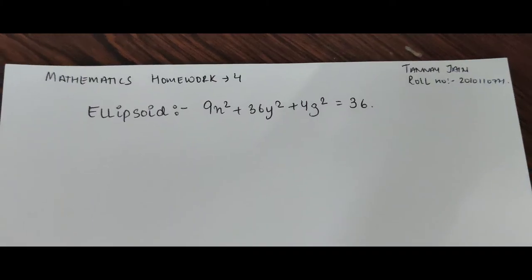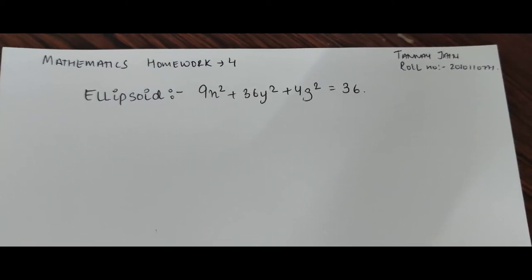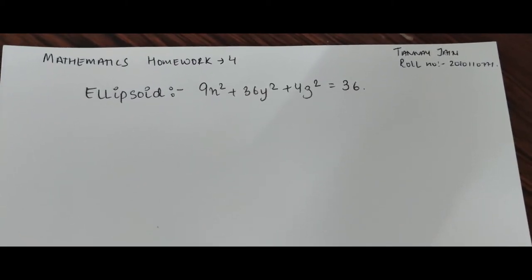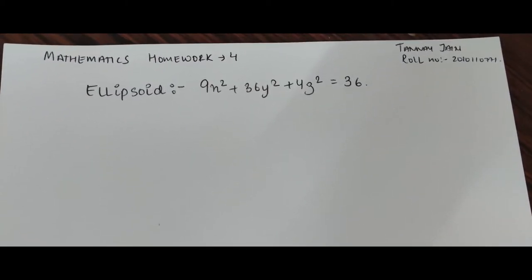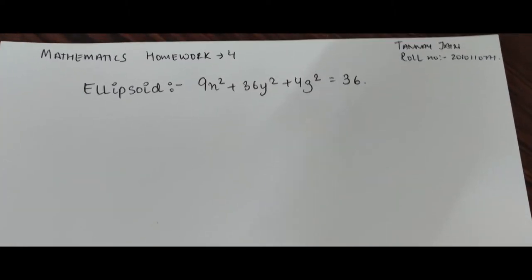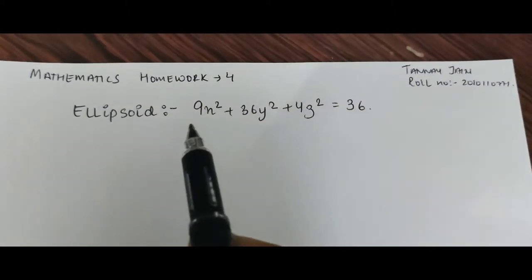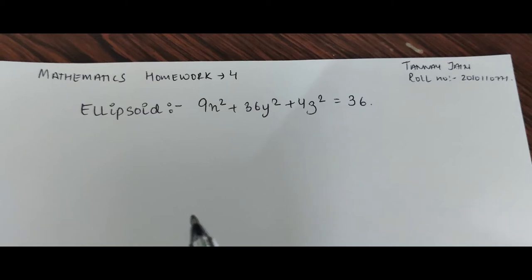Hi, I am Tanerjain and I will be solving math question number 4. The question given to us is: find the volume of the largest rectangular box with edges parallel to the axis that can be inscribed in the ellipsoid, and this function is given.